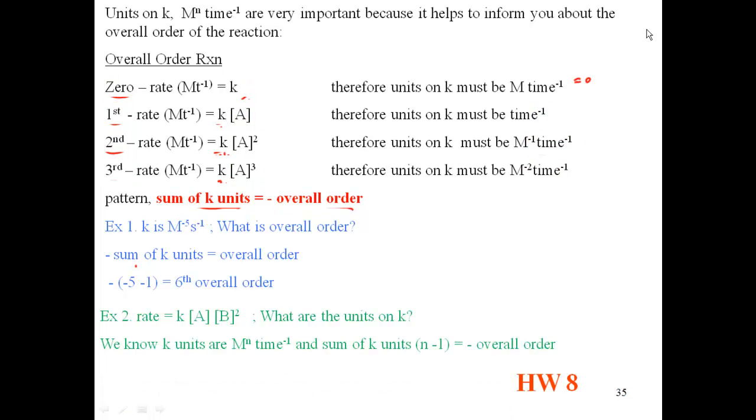Well, we know the following. We know that K units are M to the N, time minus 1. We know that it's M to the N, time minus 1. So, in other words, the sum of your K units, N minus 1, equals your negative overall order. We know that fact already. We know the sum of your K units, in other words, N minus 1, N being the power of the M, the molarity, minus 1, it's equal to your negative overall order. So, if I take that into this problem, N minus 1 is my powers of my molarity in time, that's equal to the negative overall order. What's the overall order?